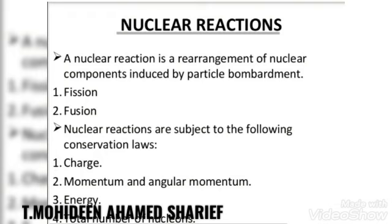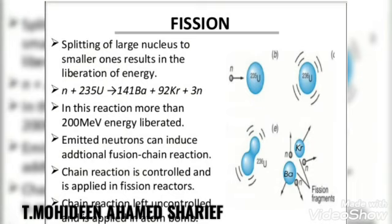Nuclear fission was discovered by German scientists Otto Hahn and F. Strassmann. They discovered that when a uranium nucleus is bombarded with a neutron, it breaks up into two smaller nuclei of comparable mass along with the emission of a few neutrons and energy. This process of breaking up of a heavier nucleus into two smaller nuclei with the release of a large amount of energy and a few neutrons is called nuclear fission.